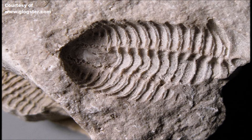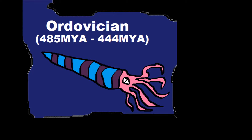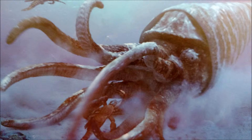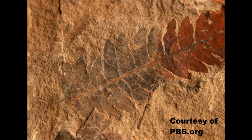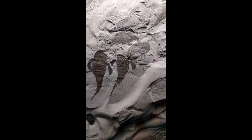This brings us to our next period: the Ordovician. This is the time of nautiloids and other sea arthropods, and very primitive fish also began to develop. That brings us to the next period, the Silurian. This is when the first land plants started to pop up. Remember, all creatures were living in the water before the Silurian.